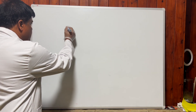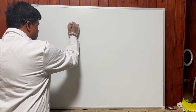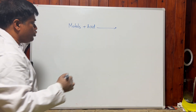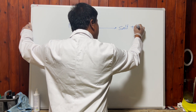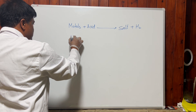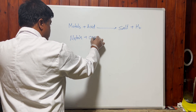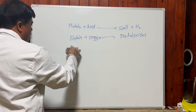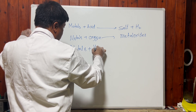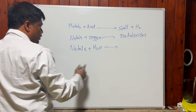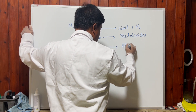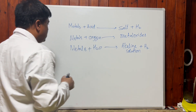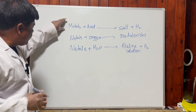In general: metals plus acid gives salt plus hydrogen gas. Metals plus oxygen gives metal oxides. Metals plus water — if the metal is from group 1 or group 2 — gives an alkaline solution which is basic in nature, plus hydrogen gas.